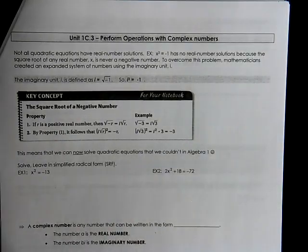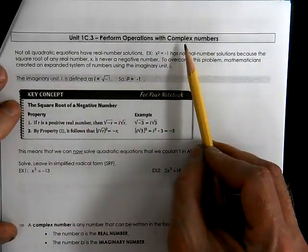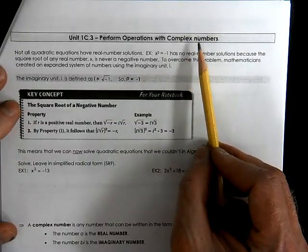This is Algebra 2 with Trigg, Unit 1c.3. We're going to talk about complex numbers today.